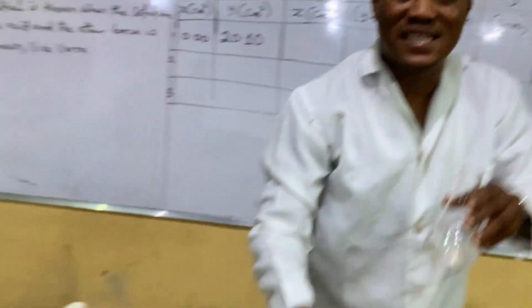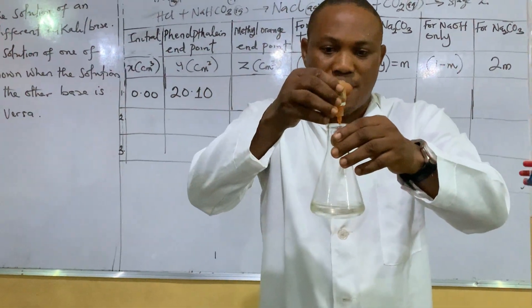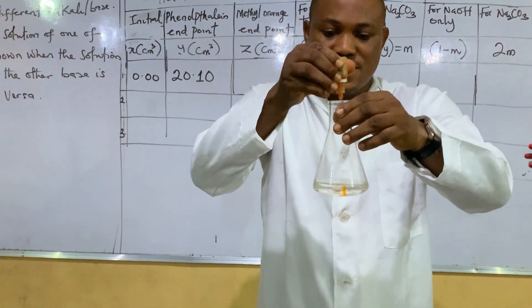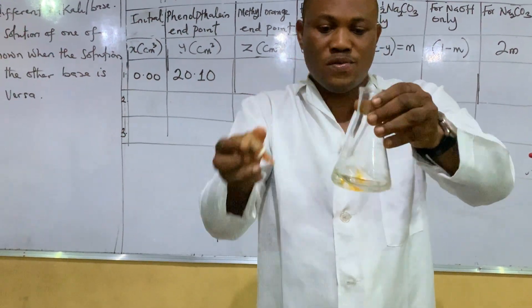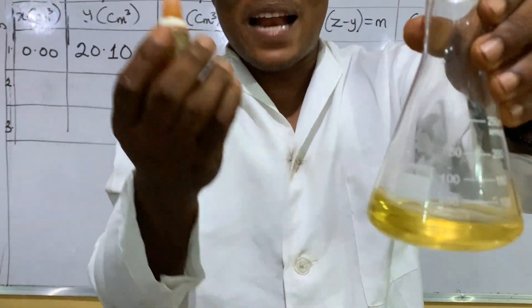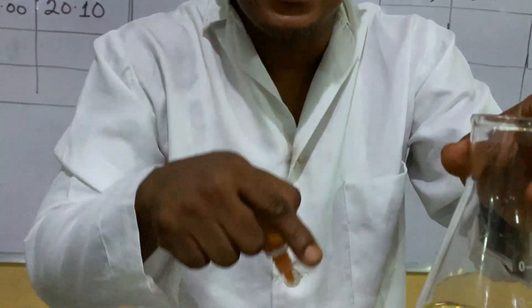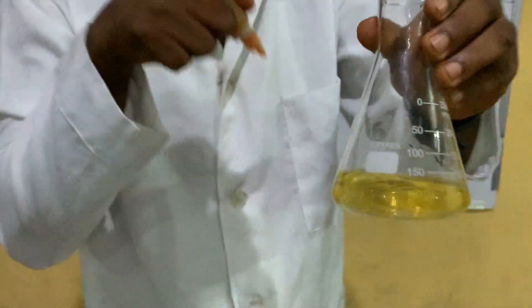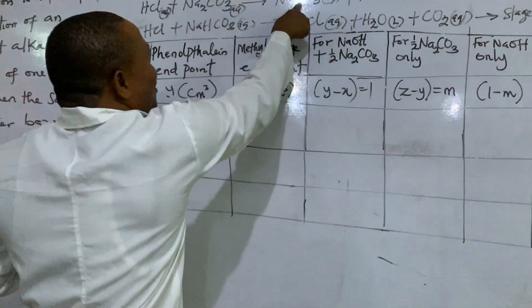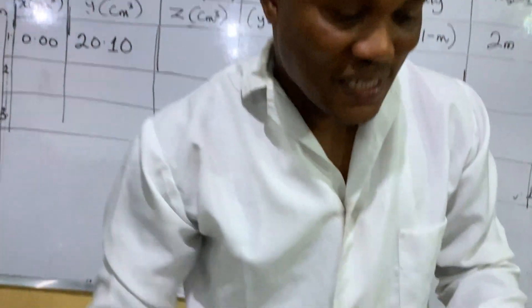Now I will add methyl orange. Do you see where the double indicator titration came from? So I'm adding two drops — one. Did you see? Which means there is a base still remaining. That's why when I added my methyl orange it's changing to yellow, because that's the color of methyl orange in base — which means there is still some amount of base here, which means I still have half.